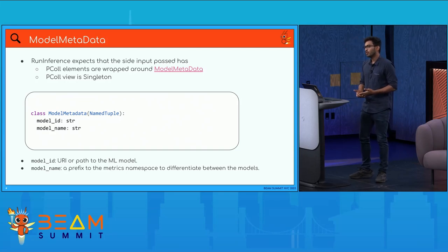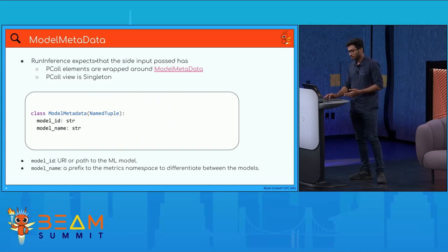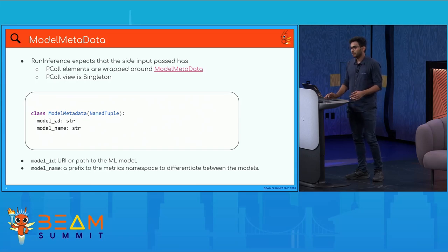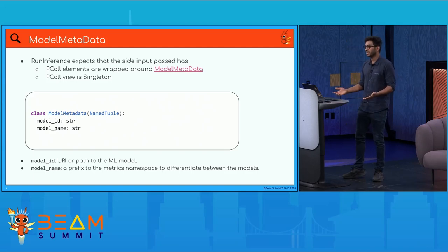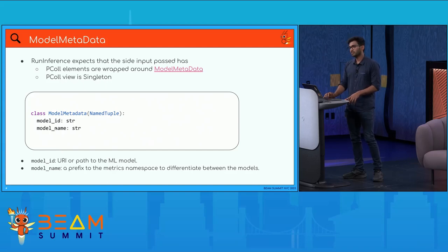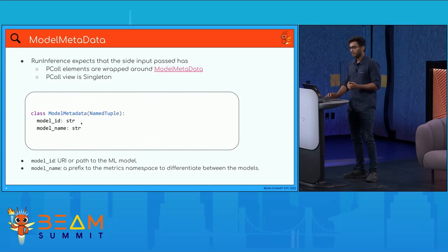Model metadata is the output format the side input expects. The side input should provide a model path wrapped in a model metadata object to provide uniformity across all model handlers. Model metadata has two attributes: model ID and model name. Model ID is the model URI or path used to load the model. Model name is a unique human-readable identifier, and it is also used as a prefix attached to the metrics namespace to differentiate metrics calculated by different models.